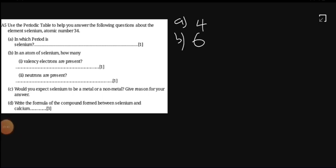To answer B2, it says the neutrons present. We know that selenium has got a mass number of 79, and atomic number of 34. How do we find the number of neutrons?